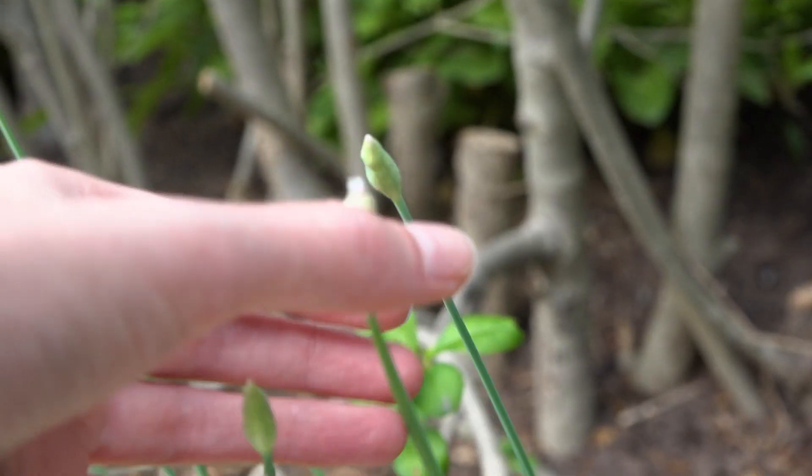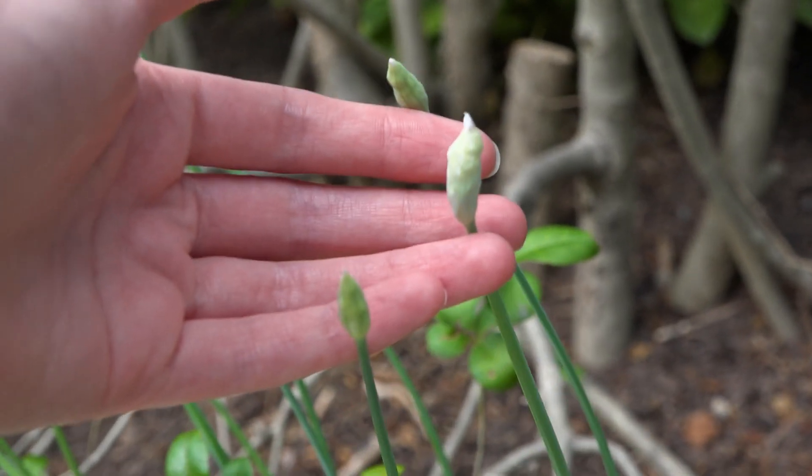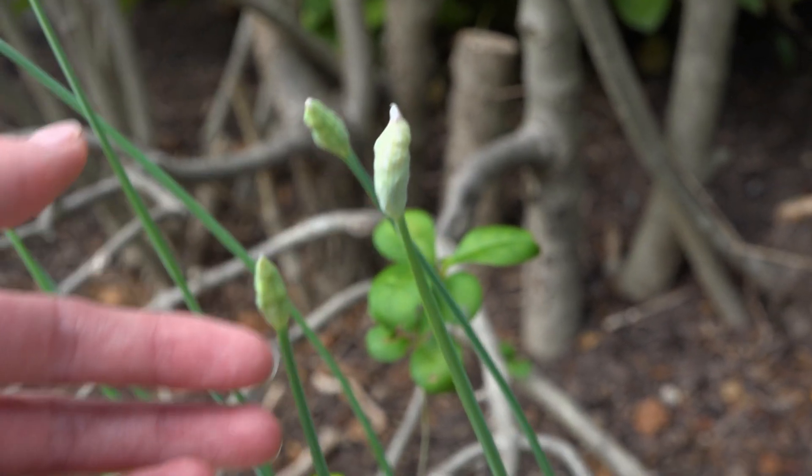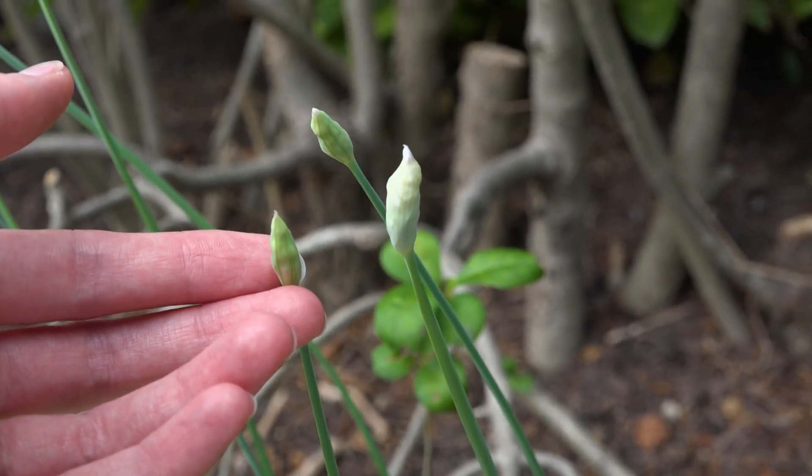I'm using onion flowers because they make these giant heads that contain flower buds at lots of different developmental stages, which is ideal if we want to see the different stages of meiosis.